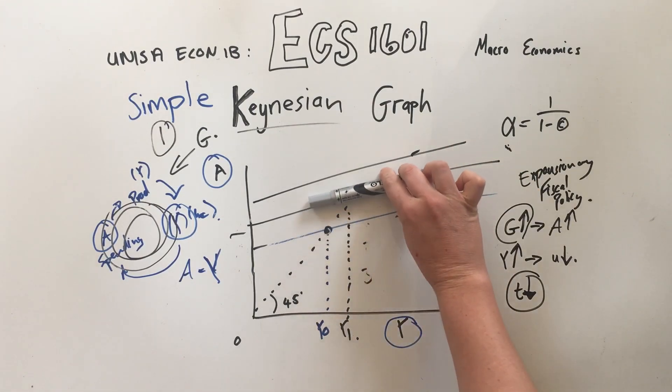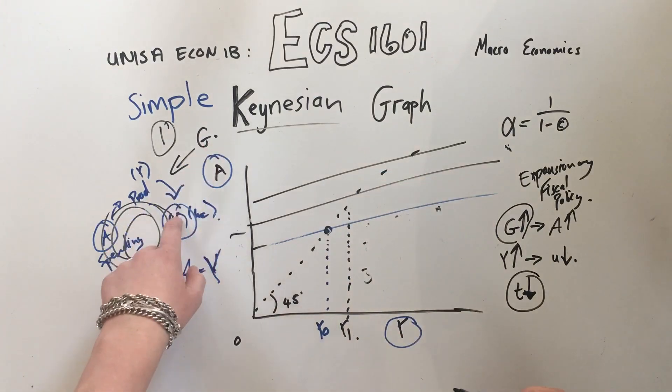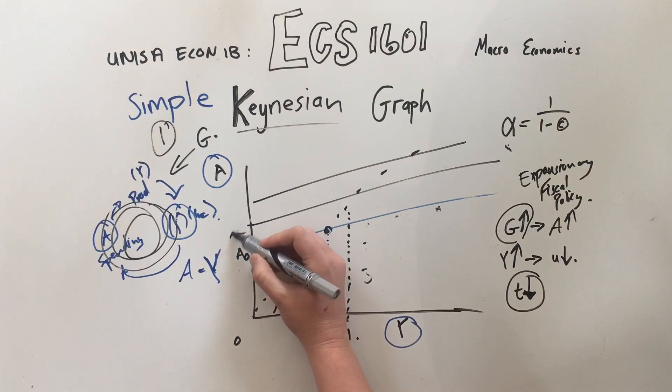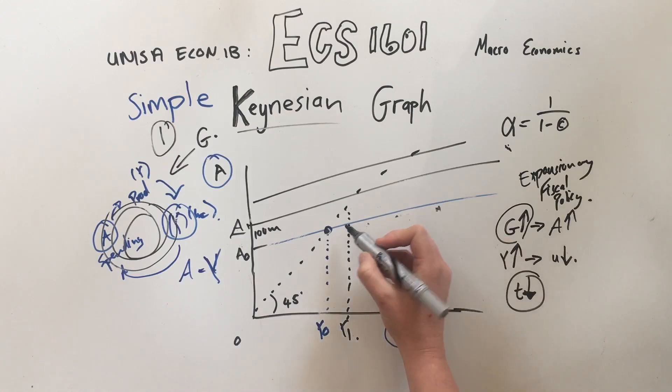However much the multiplier means that whatever you inject, this Y will move even further. So if you can move A0 to A1 with, let's say, a hundred million, the multiplier will move it further than a hundred million.